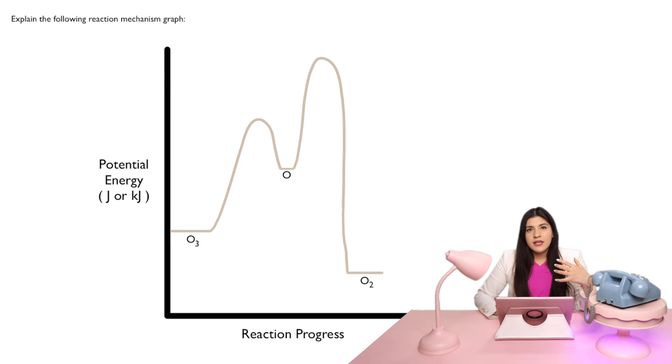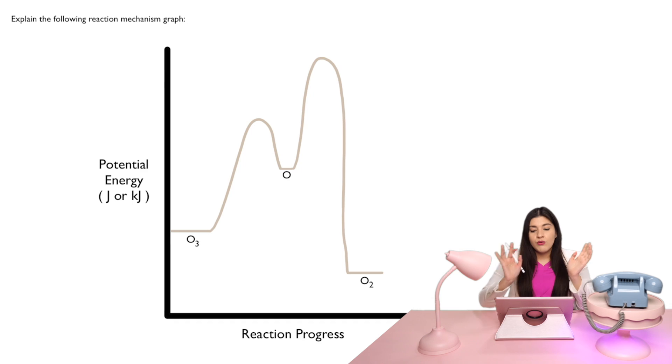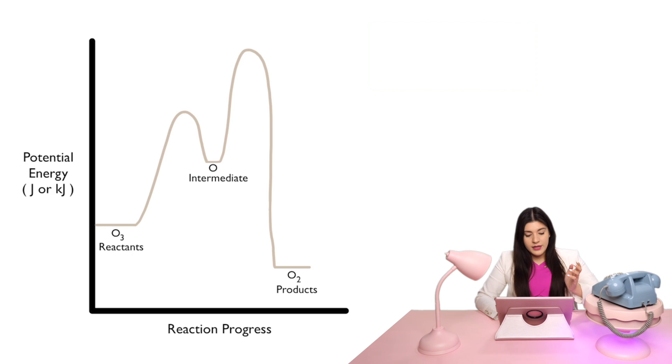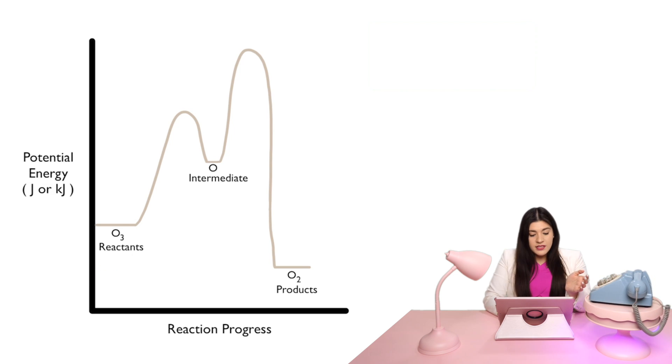So let's start off with identifying what's our reactants, what are our products, and then seeing what type of reaction this overall is. If I were to label this, where here I have O3, this is actually our reactants. And on the left side, that's always going to be our reactants. And then on the right side, that's going to then form our products.